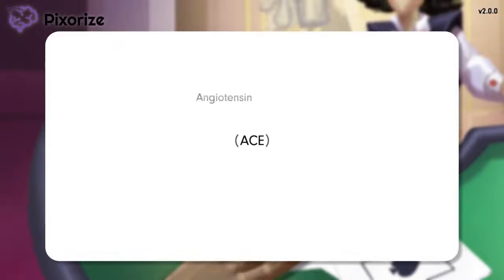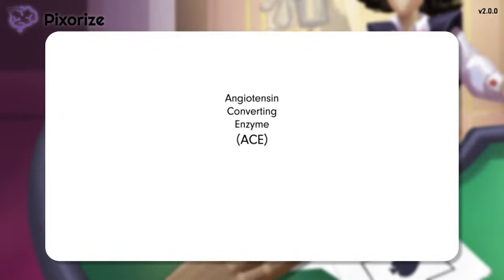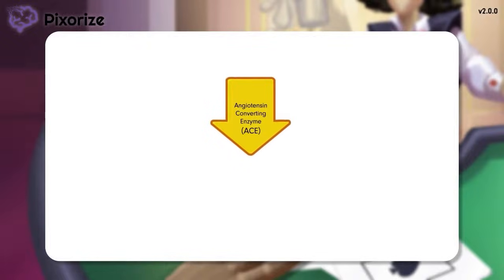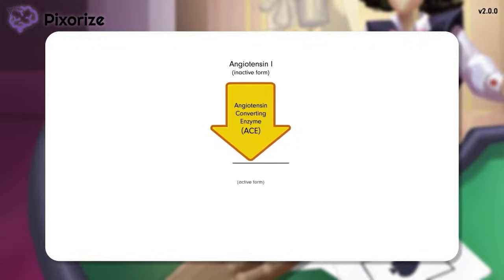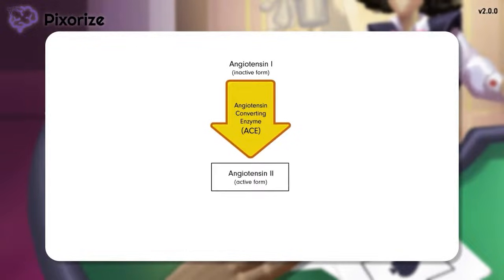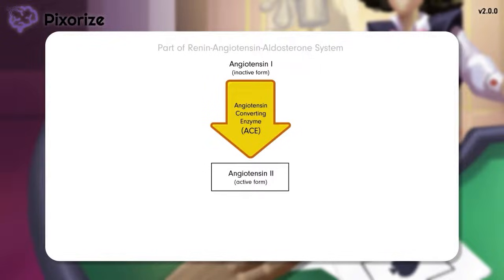ACE stands for angiotensin-converting enzyme. Like its name suggests, the angiotensin-converting enzyme normally functions to convert the hormone angiotensin from its inactive form, angiotensin-1, into its active form, angiotensin-2. This conversion is a part of a big hormonal pathway known as the renin-angiotensin-aldosterone system, or RAS for short.